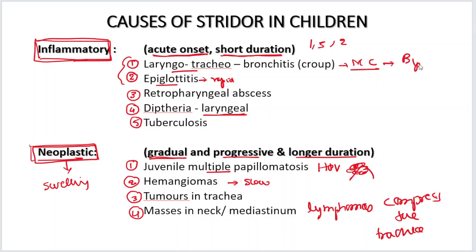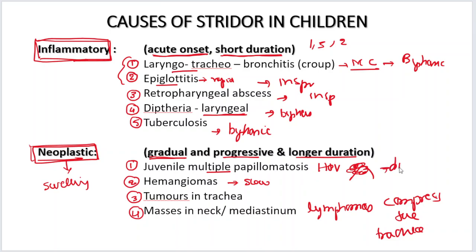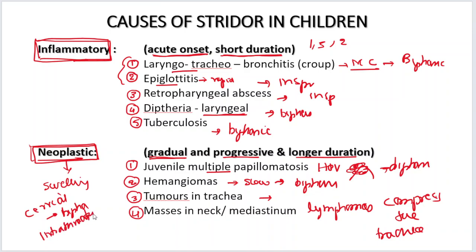Regarding the type of Strider: laryngotracheobronchitis gives biphasic Strider; acute epiglottitis is inspiratory; retropharyngeal abscess is inspiratory Strider. Diphtheria involving the larynx gives biphasic Strider; tuberculosis of the larynx is also biphasic. Juvenile multiple papillomatosis is biphasic; subglottic hemangiomas are most common and give biphasic Strider. Tumours of the cervical trachea give biphasic Strider. If it is in the intrathoracic trachea or a mediastinal mass compressing the intrathoracic trachea, you may have expiratory Strider. So most cases are either inspiratory or biphasic — expiratory is seen here specifically.